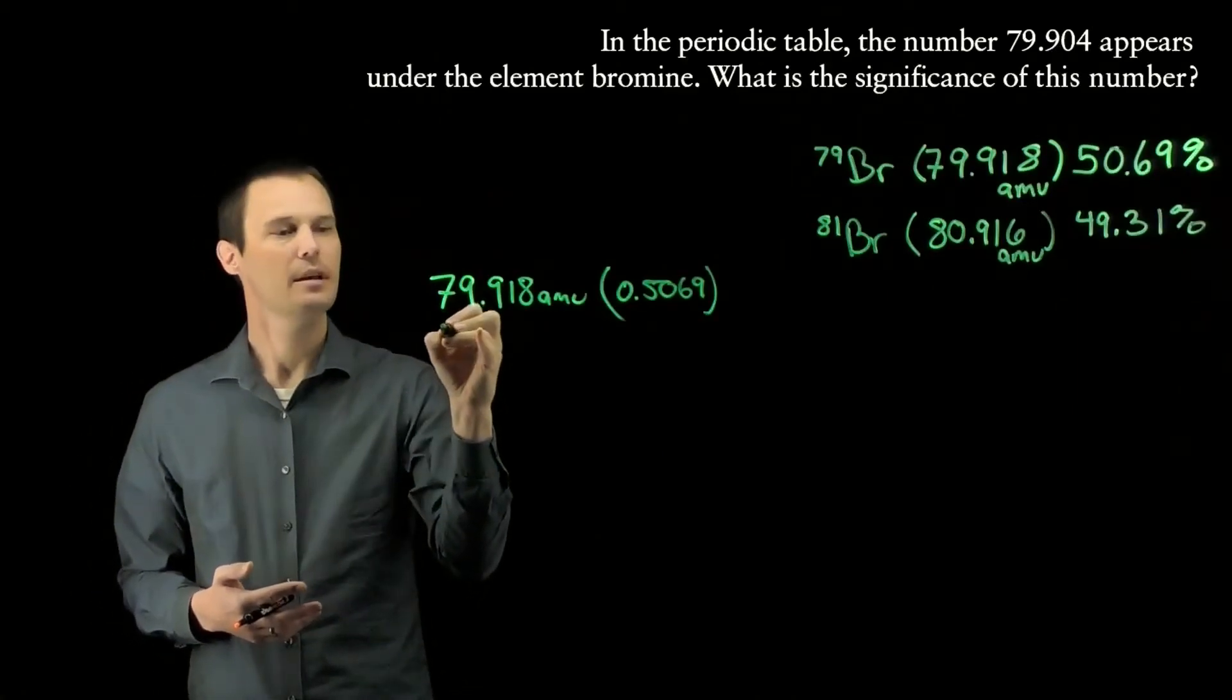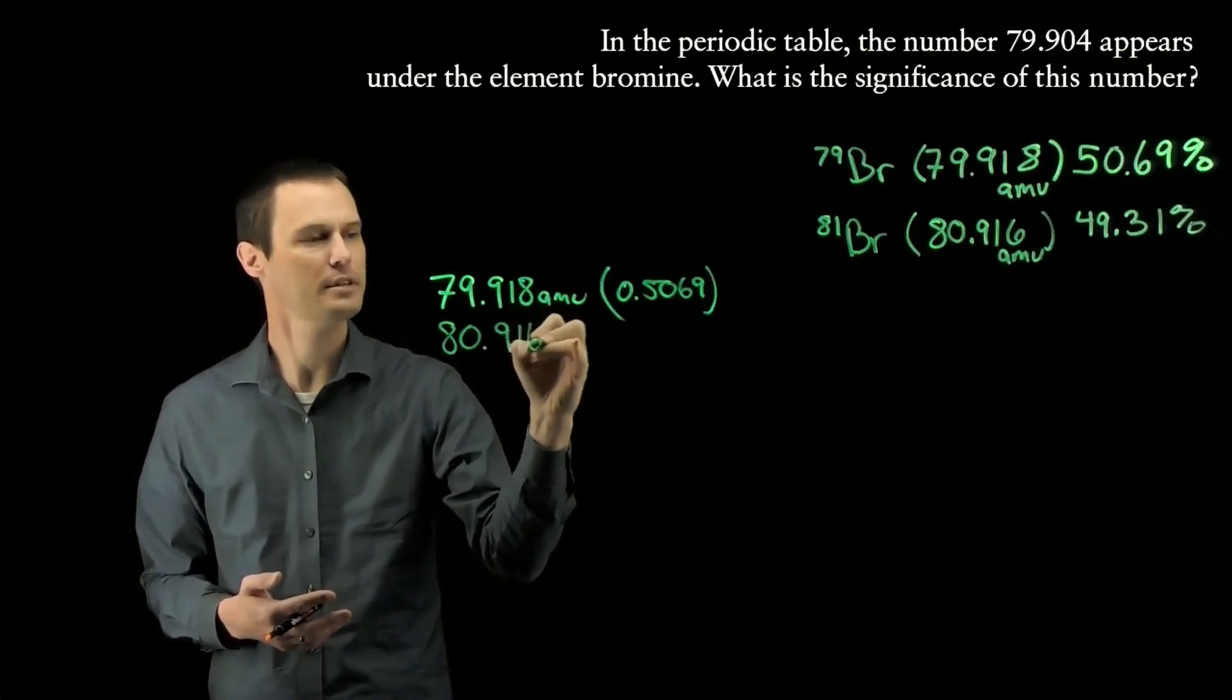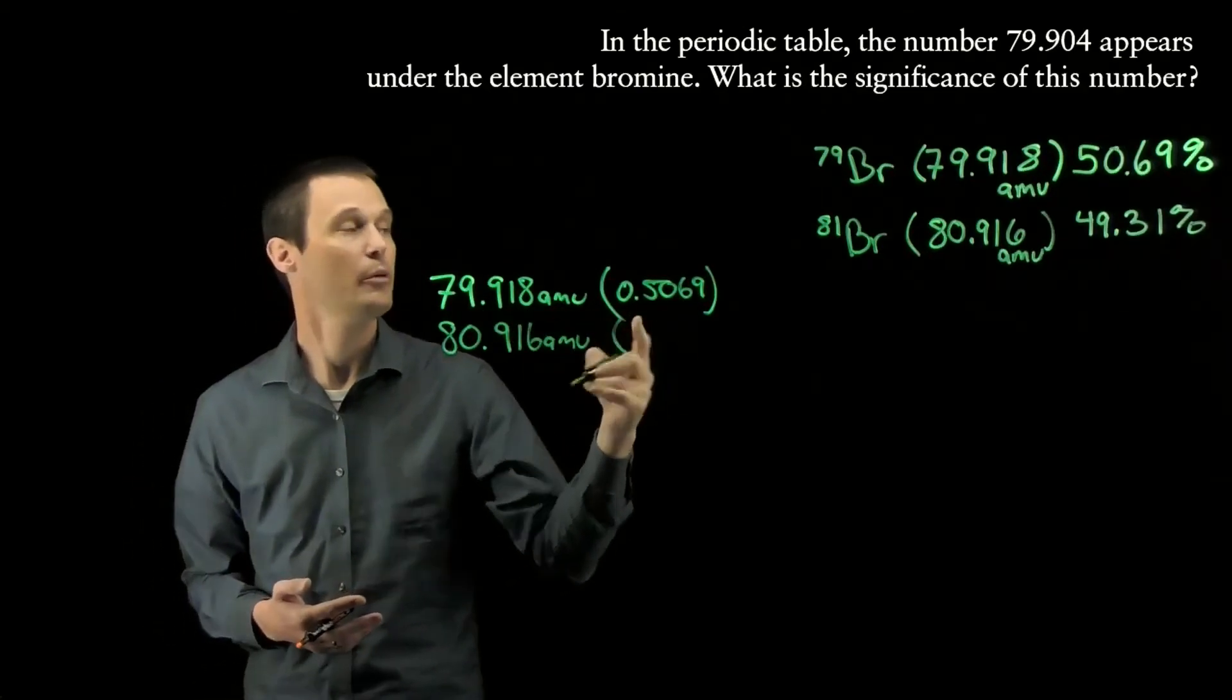And we take our actual mass for bromine-81, which is 80.916 amu, and we multiply it by its isotopic abundance, which is 49.31%.